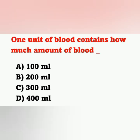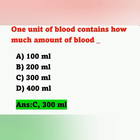Question 2: One unit of blood contains how much blood? Options: A) 100 ml, B) 200 ml, C) 300 ml, D) 400 ml. The correct answer is option C — one unit of blood contains 300 ml.